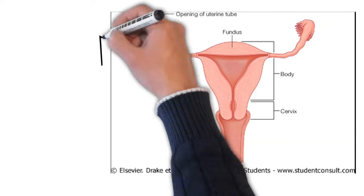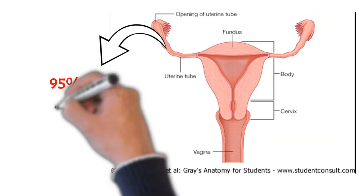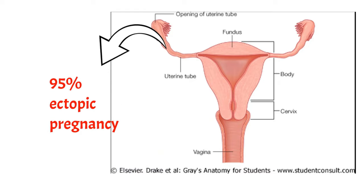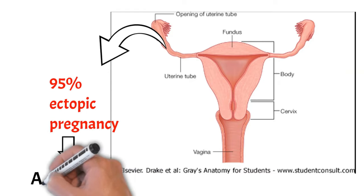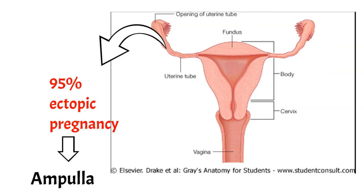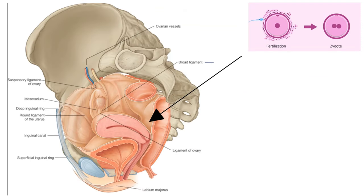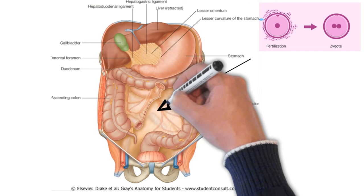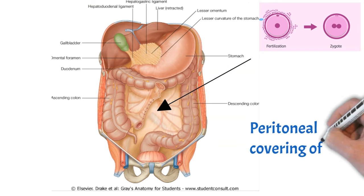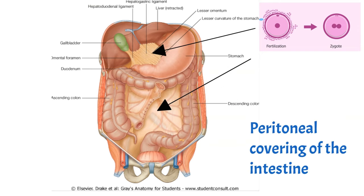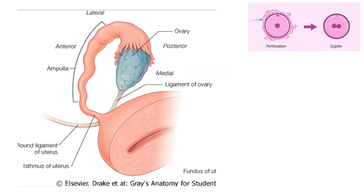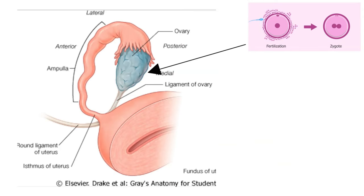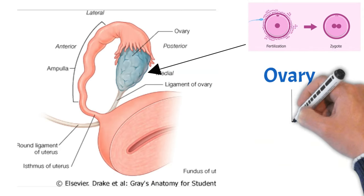Ectopic pregnancy may occur at any place in the abdominal cavity, ovary, or uterine tube. However, 95% of ectopic pregnancies occur in the uterine tube, most of which are in the ampulla. In the abdominal cavity, the zygote is attached to the peritoneal lining of the recto-uterine cavity and may also be attached to the peritoneal covering of the intestinal tract or the omentum. Sometimes the zygote develops in the ovary itself, forming what is known as primary ovarian pregnancy.